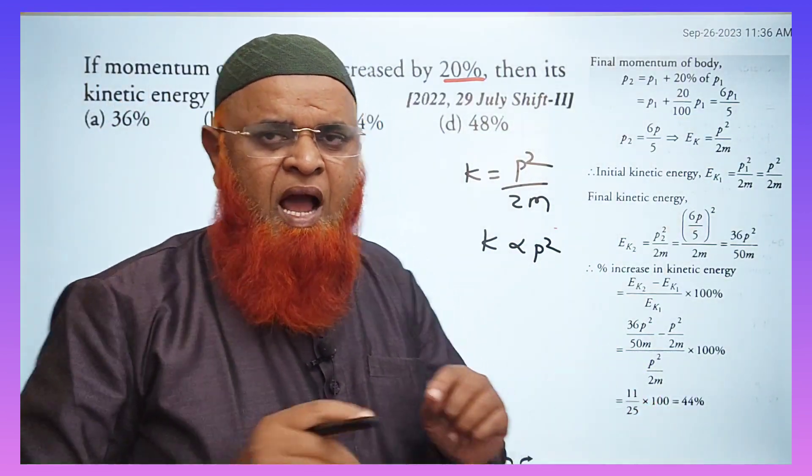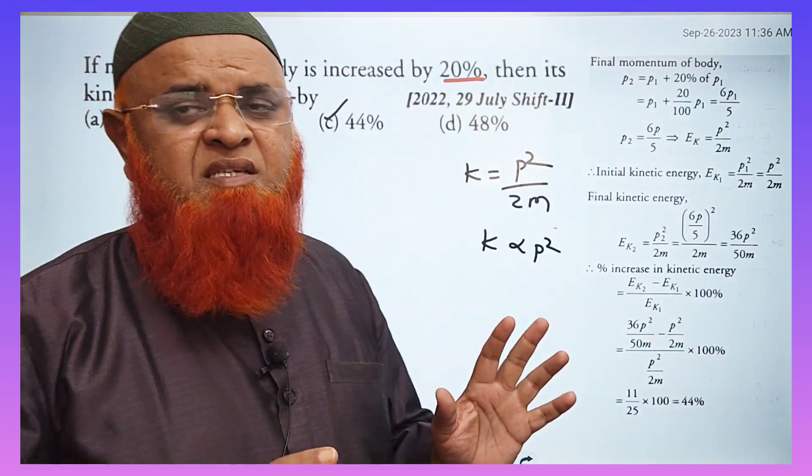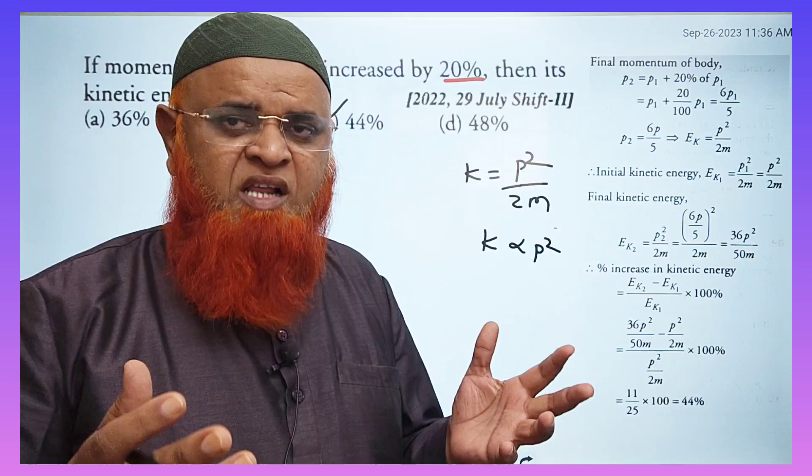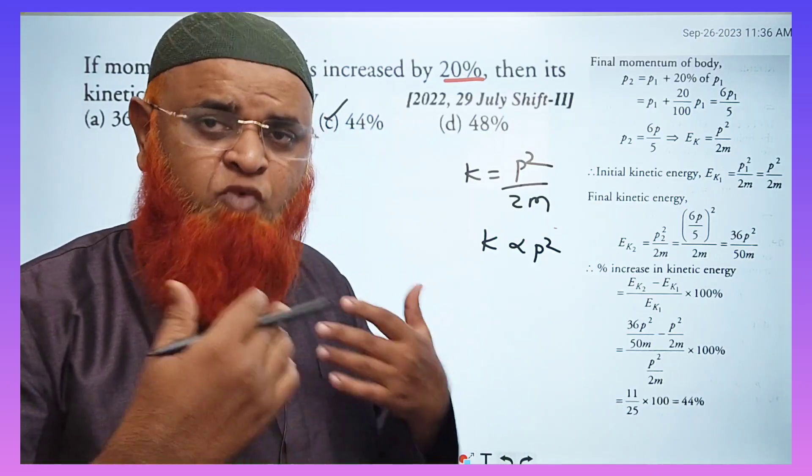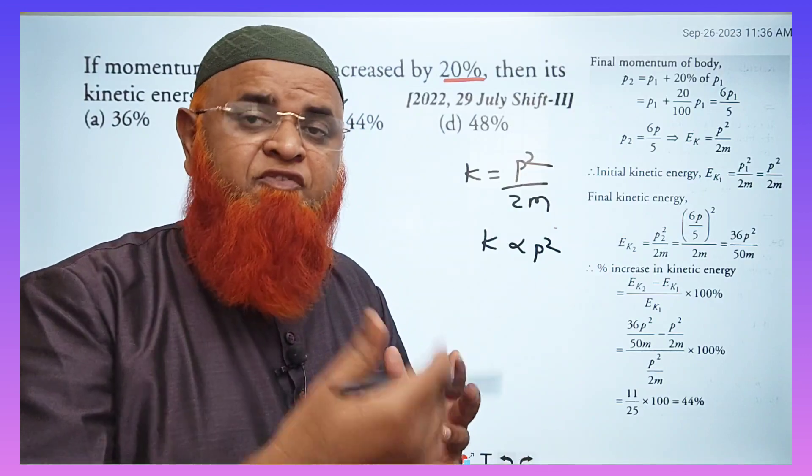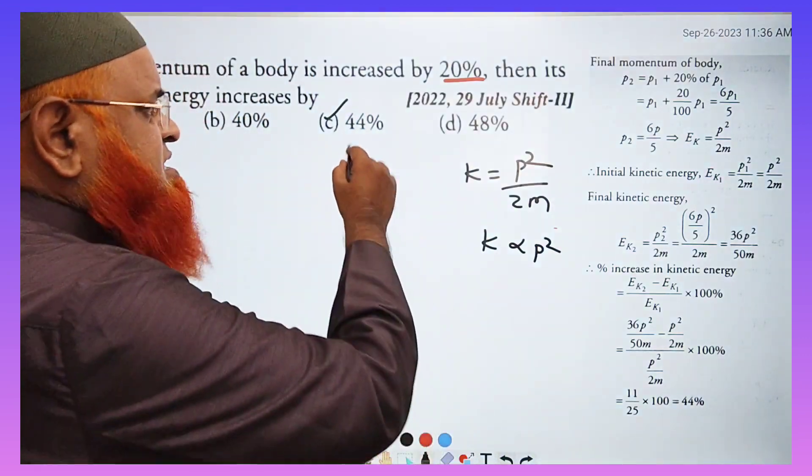Without any pen and paper, I will just see that 20% extra means 120. So 120 means 12. 12 squared is 144. 144 means how much is extra? Beyond 100, 44 extra. So directly write the answer is 44%.